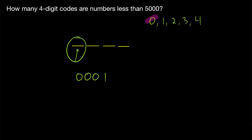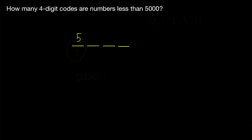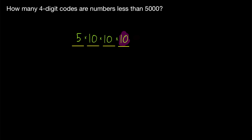If we pick 5 or greater, then we're going to have a number that's greater than or equal to 5,000, and we're trying to count four-digit codes that represent numbers less than 5,000. So our first digit can be any of these five numbers: 0, 1, 2, 3, or 4. After that, any of the ten digits 0 through 9 are fair game for the other three spots. So our second, third, and fourth digits each have 10 possibilities. This comes out to be 5,000 four-digit codes representing numbers that are less than 5,000.